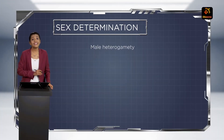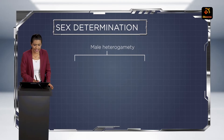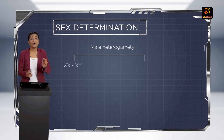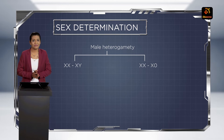There are two types in male heterogamety. One is the XX-XY type of male heterogamety, whereas the other is the XX-X0 type.